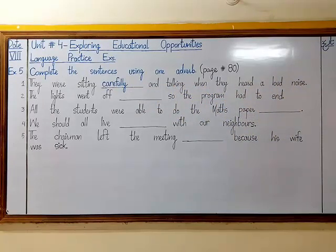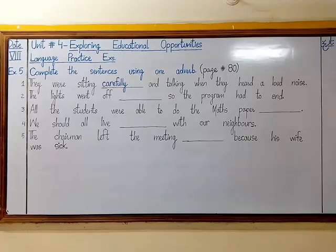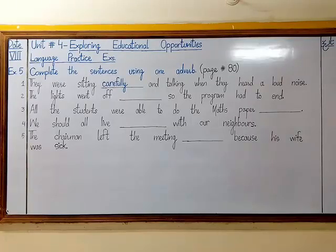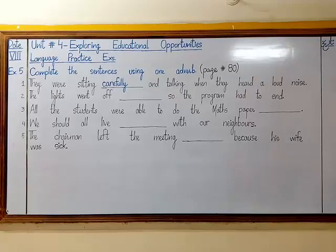Since we are solving this exercise in the book, the blank spaces are small, so write the adverb slightly above the blank to fit it in. There is no need to use a separate register or copy for this — it can be done in the book. Sentence number two: the lights went off dash so the program had to end. A student answered very correctly — the answer is suddenly. The lights went off suddenly, so the program had to end. Write suddenly in the blank.